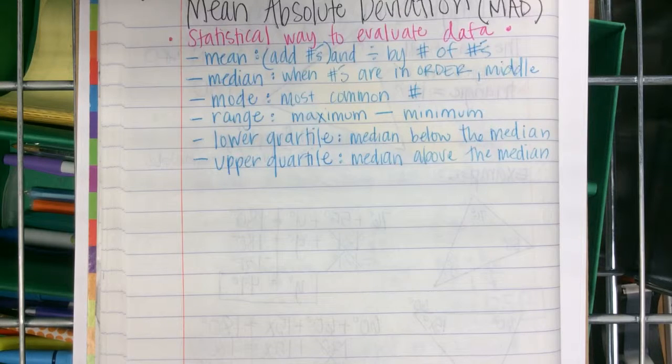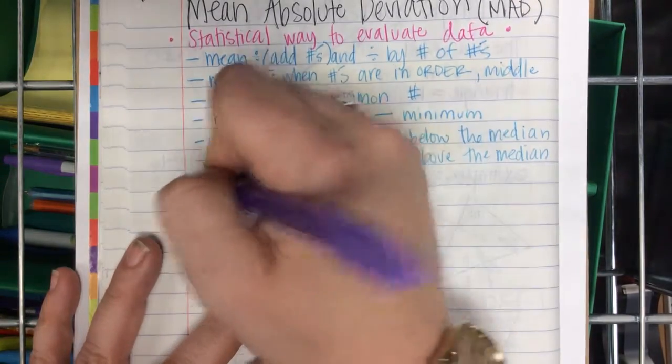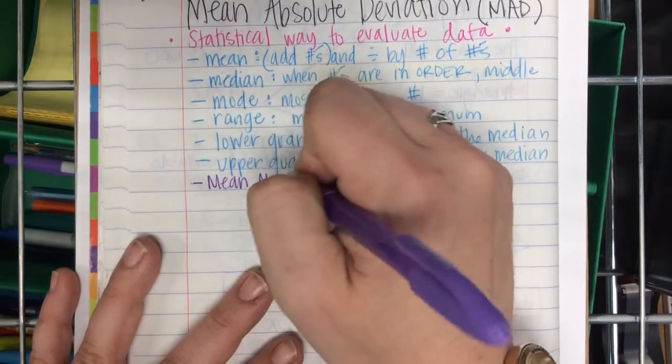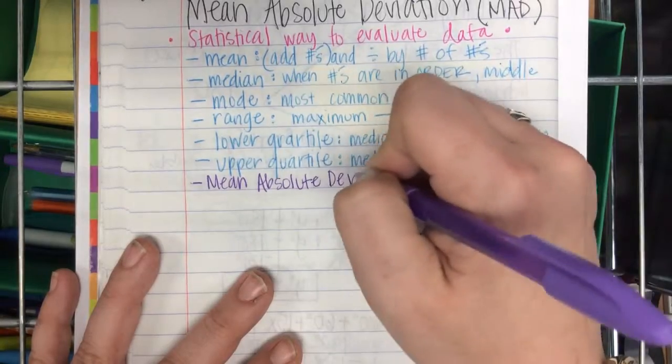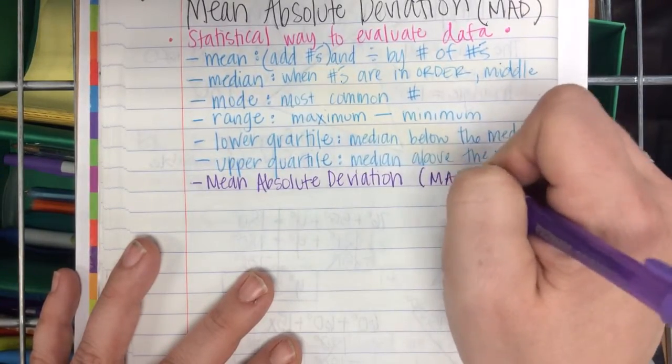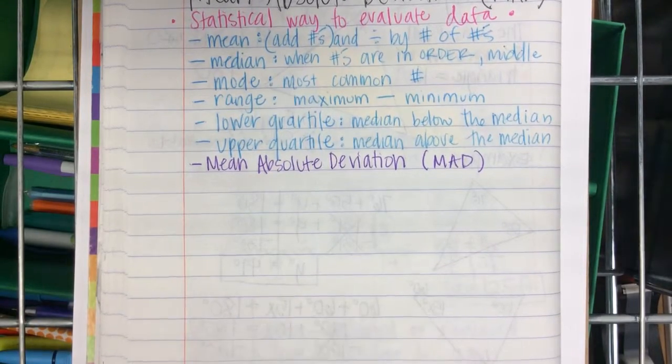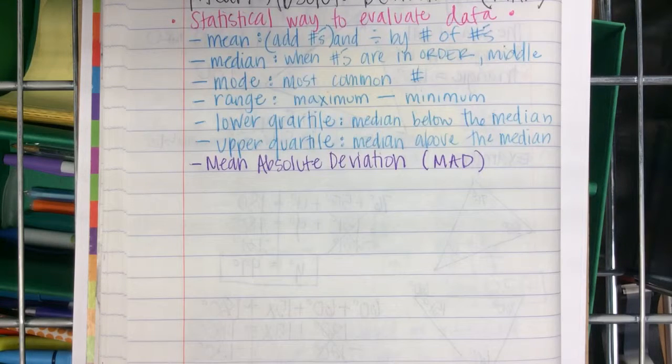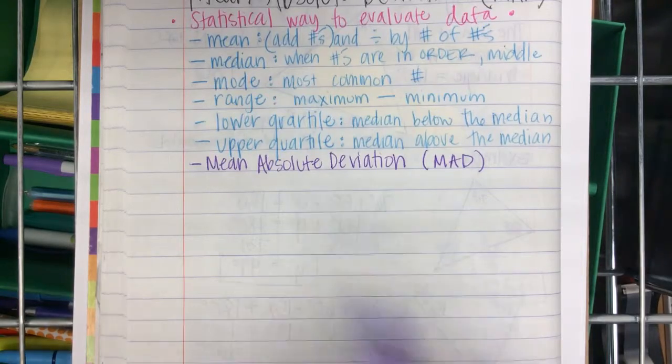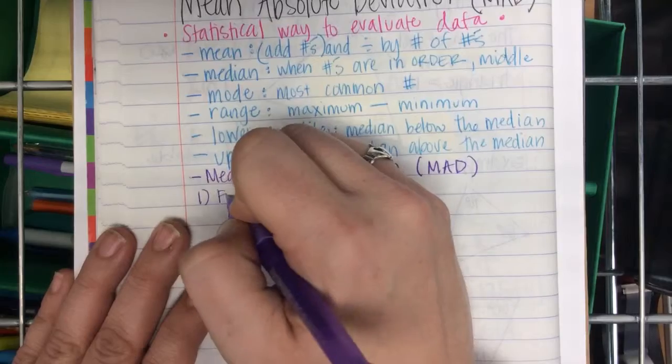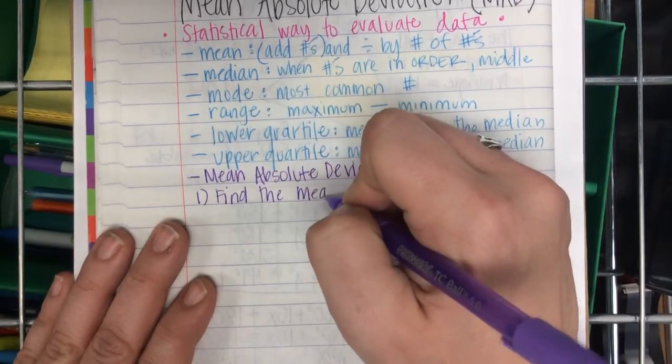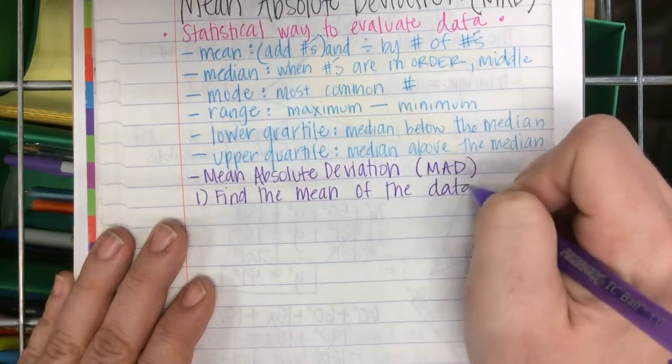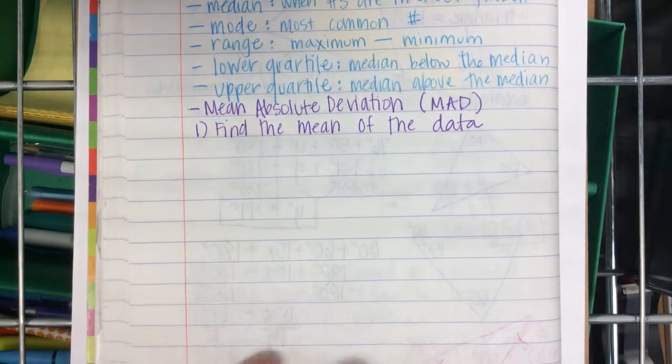So we're adding to this, all of this knowledge, we're adding the mean absolute deviation, which we abbreviate as MAD. And there are three steps to finding the mean absolute deviation. The first step is to find the mean of the data, which you already know how to do.